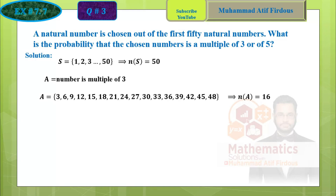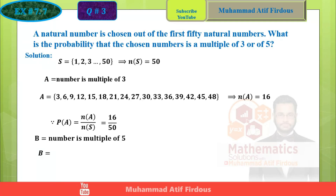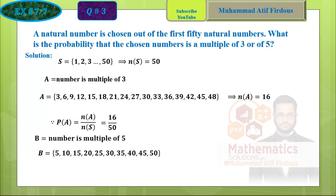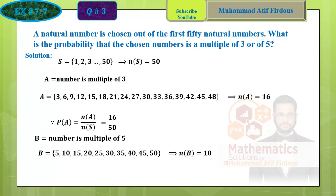The probability of A — multiples of 3 — is required over total: 16 over 50. Now the second event: multiples of 5 from 1 to 50. Those are 5, 10, 15, 20 ... up to 50. Count them: 1, 2, 3, 4, 5, 6, 7, 8, 9, 10 — so N of B equals 10.